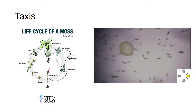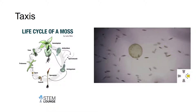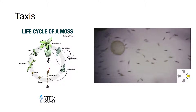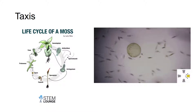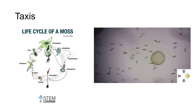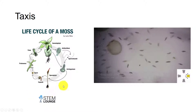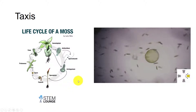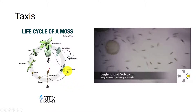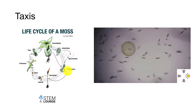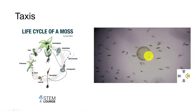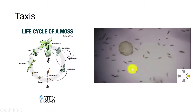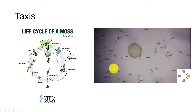Taxis is a response in which a cell swims toward or away from a stimulus. In some plants, such as mosses, ferns, cycads, or ginkgo trees, sperm cells swim to egg cells by following a chemical gradient — chemotaxis. In algae, phototaxis allows them to swim toward light for photosynthesis or away from light that is too intense. You can see this euglena cell is swimming away from the light, while the volvox is swimming towards it.